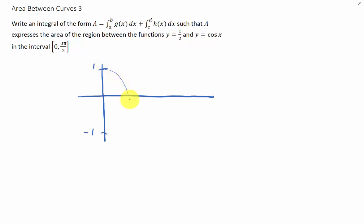Our graph of cosine of x oscillates between 1 and negative 1. Cosine of x has zeros at π/2 and 3π/2, maximum values at 0 and 2π, and a minimum value at x equals π. Our other function is just a horizontal line, y = 1/2. Keep in mind that we're only interested in the interval 0 to 3π/2.